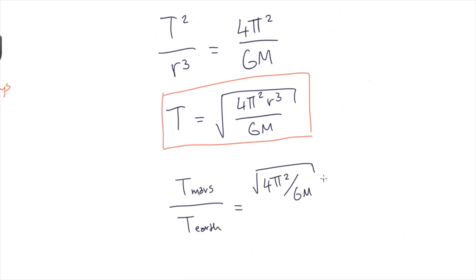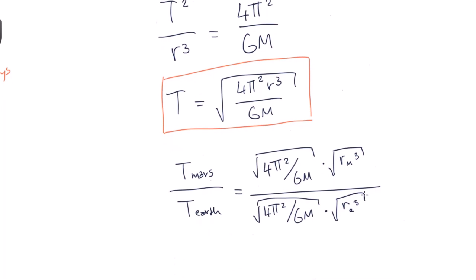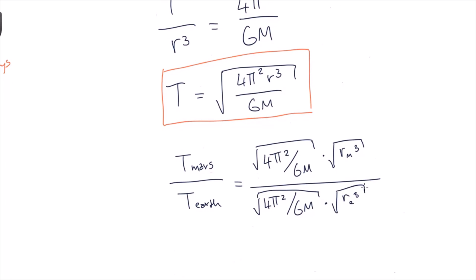If we compare the period of Mars to the period of Earth, we see that most of the variables will cancel. And we're left with period of Mars equal to the square root of the distance from Mars to the Sun cubed, divided by the distance from the Earth to the Sun cubed.